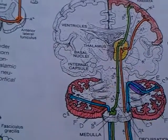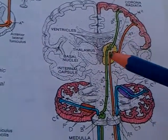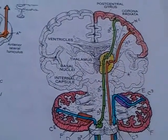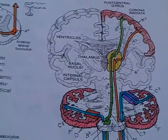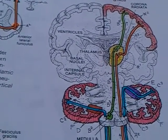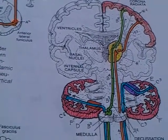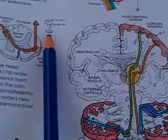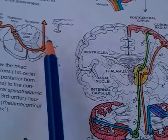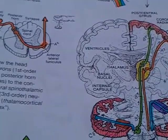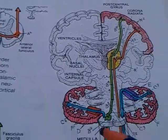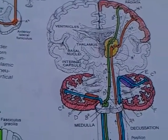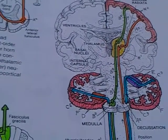From the thalamus, the thalamocortical tract sends fibers to the postcentral gyrus, which is the main sensory cortical area. These are tracts of protopathic sensibility, serving mainly painful sensations, touch, pressure, and temperature. The spinothalamic tract also conveys sensations from inner organs — mainly pain — which is called visceral sensibility.